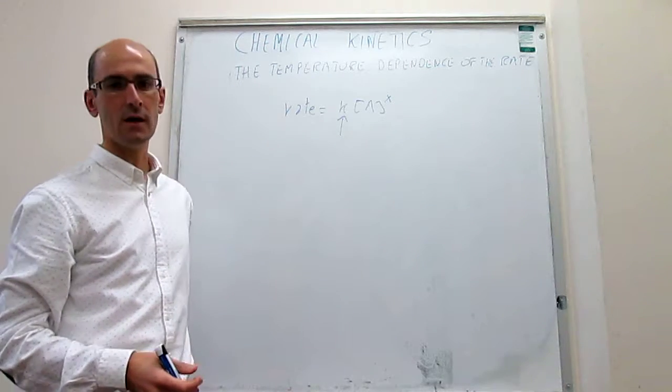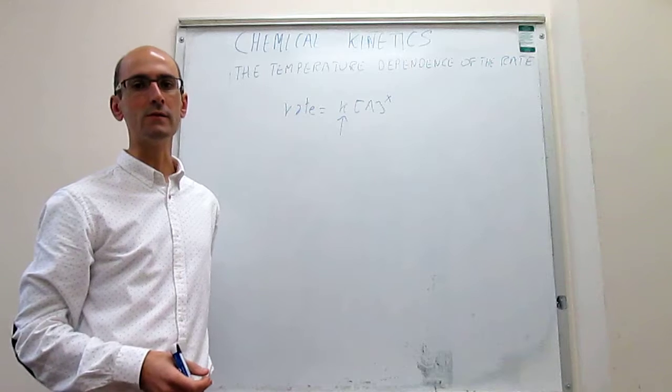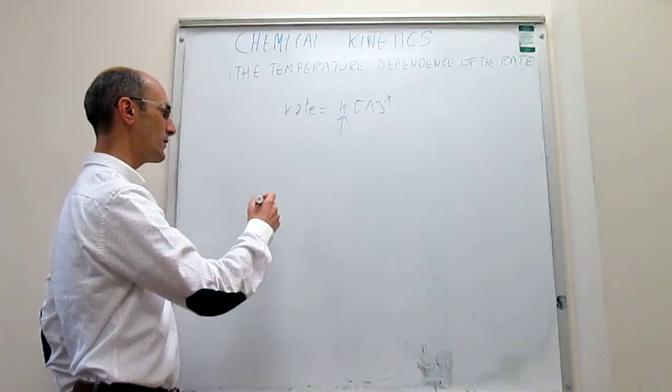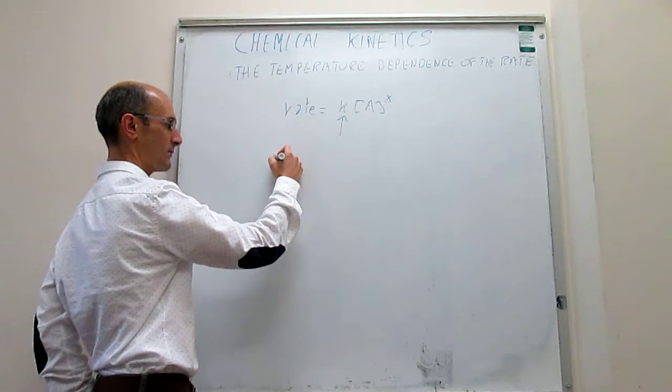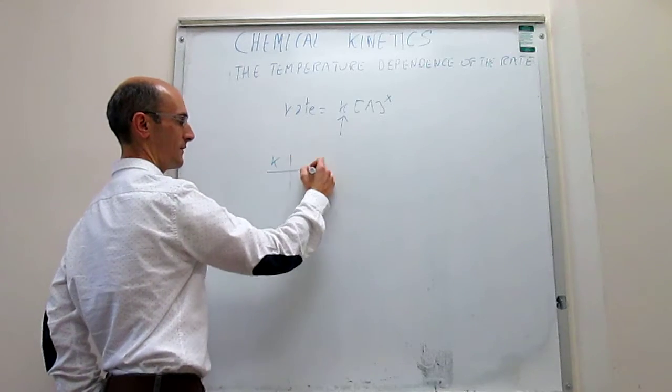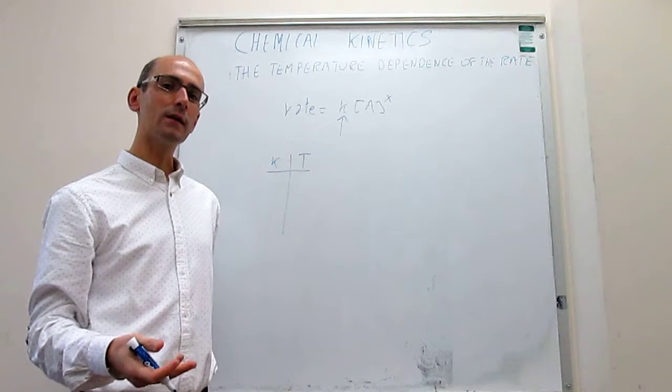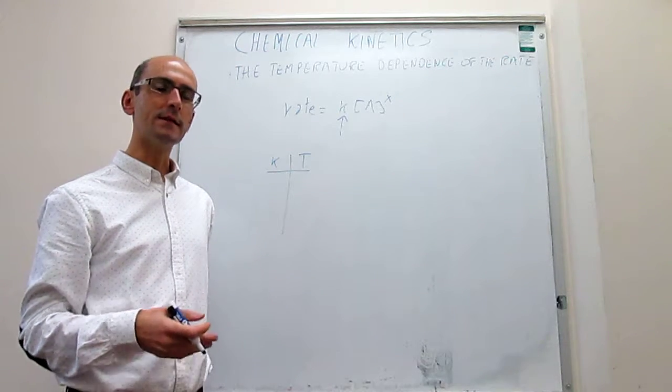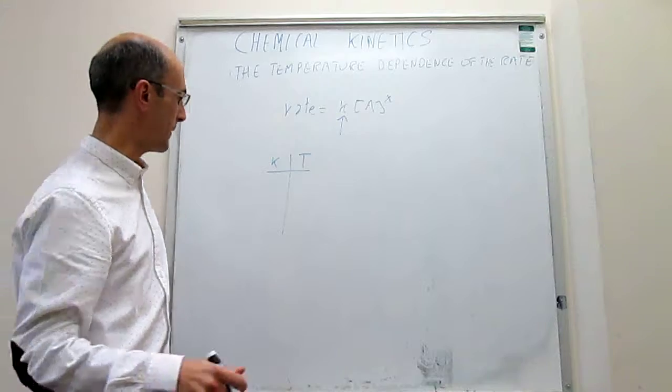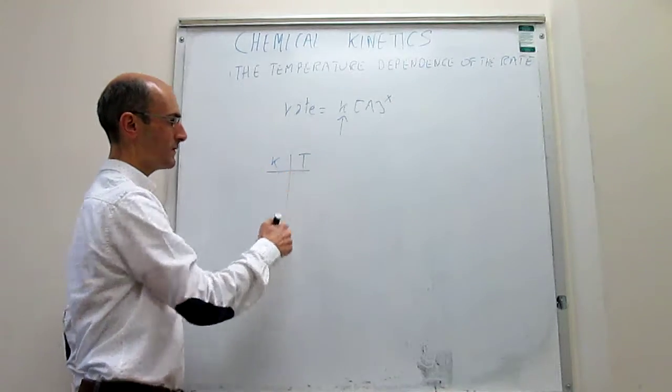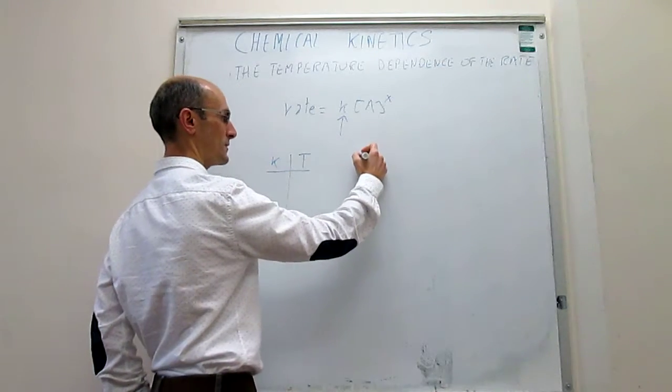And the way that the rate constant depends on the temperature was studied by Arrhenius. And what Arrhenius found is that he was able to measure the rate constant as a function of various temperatures for various chemical reactions. And he found that most chemical reactions actually had the same functional form for the dependence of the rate constant on the temperature.